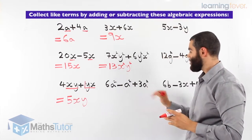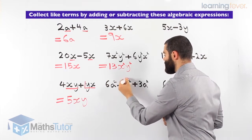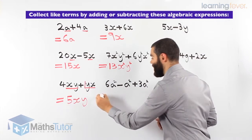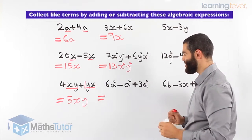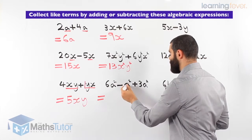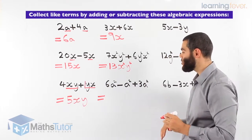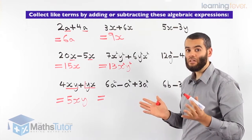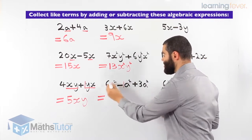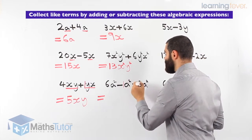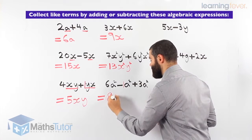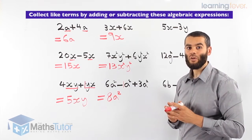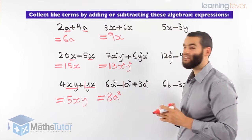Now we have 3 terms and we are asked to collect them. We have a squared, a squared, and a squared — yes, they are all like terms. In front of the lone a squared there is an invisible 1. So 6 take away 1 is 5, then 5 plus 3 is 8a squared. So 6a squared minus 1a squared is 5a squared, and 5a squared plus 3a squared is 8a squared.